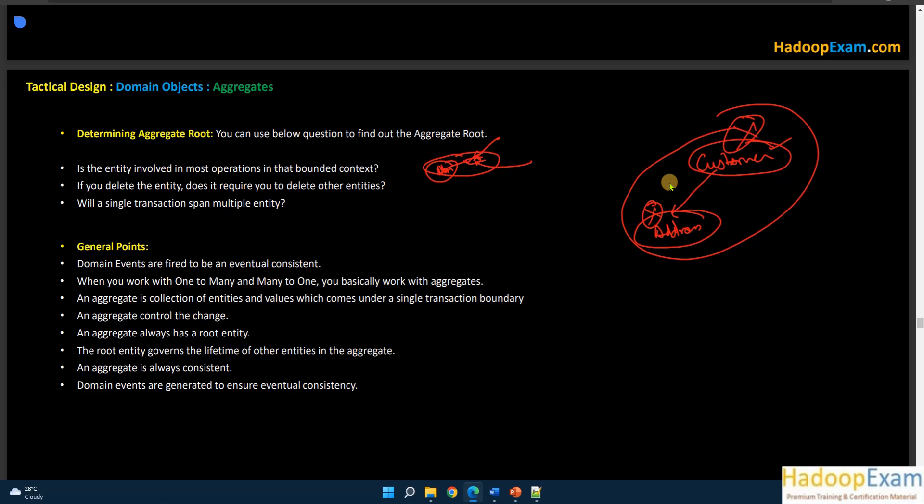Another question: Will a single transaction span multiple entities? That is one way to identify if an entity is an aggregate root. The aggregate root is the entity through which all transactions must pass. Domain events are fired to ensure eventual consistency — for example, after updating an address, a new event is generated and the system becomes eventually consistent. When you work with one-to-many or many-to-one relationships, you're typically working with aggregate roots.